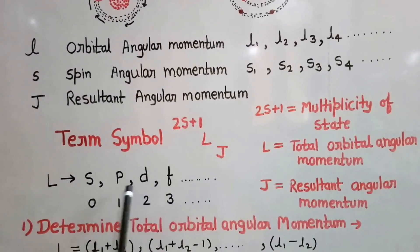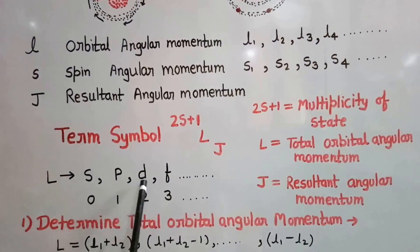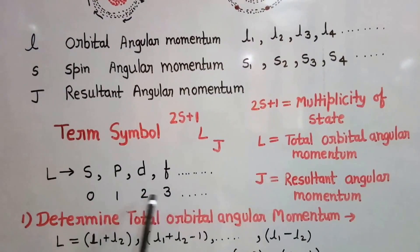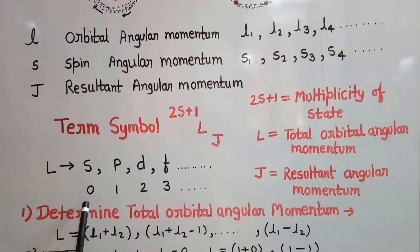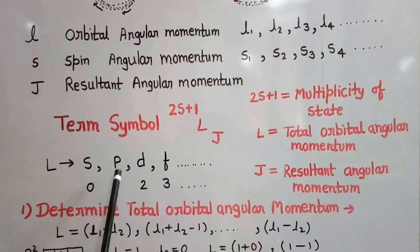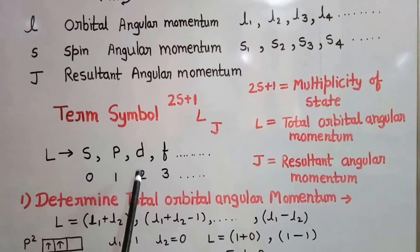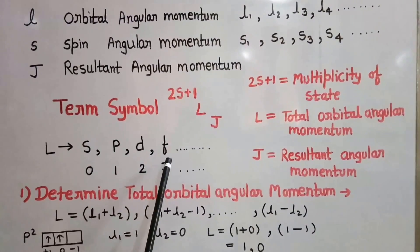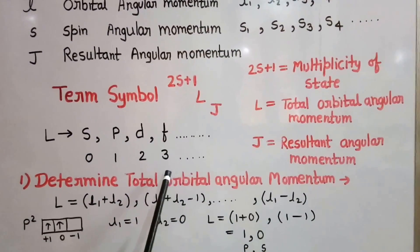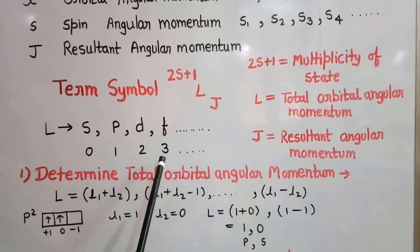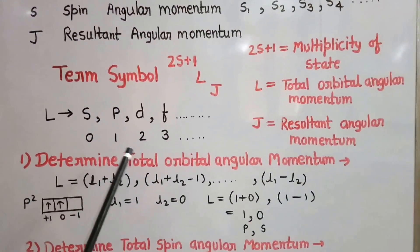L is represented by various letters: S, P, D, F, where S means L=0, P means L=1, D means L=2, and F means L=3, and so on.